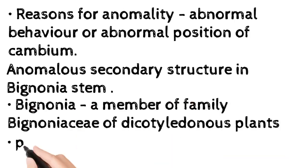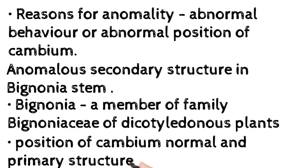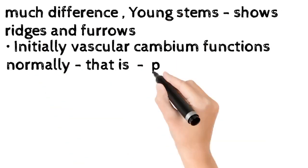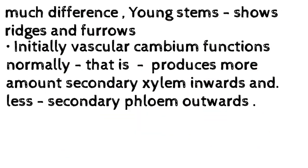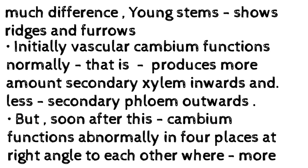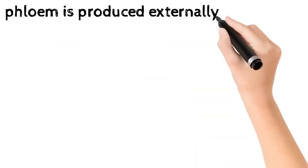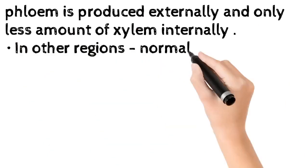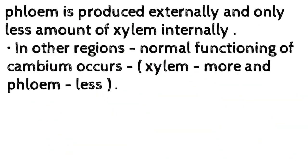Anomalous secondary structure in Bignonia stem: Bignonia, a member of family Bignoniaceae of dicotyledonous plants, has a normal primary structure. Young stems show ridges and furrows. Initially, vascular cambium functions normally — producing more secondary xylem inward and less secondary phloem outward. But soon after, the cambium functions abnormally in four places at right angles to each other, where more phloem is produced externally and only less xylem internally.